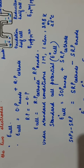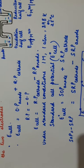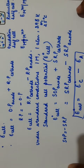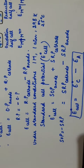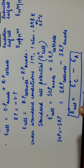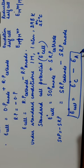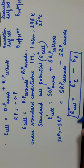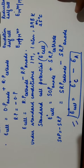This is the formula that we will be using for solving the numericals based on cell potential. E naught cell is equal to E cathode minus E anode, or we can write E right minus E left. We will use this formula for solving the numericals based on standard electrode potential.